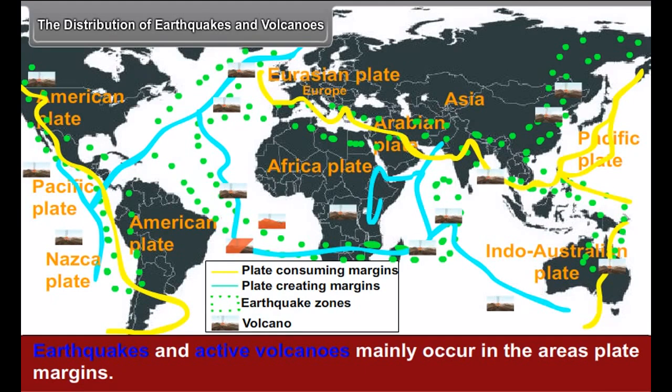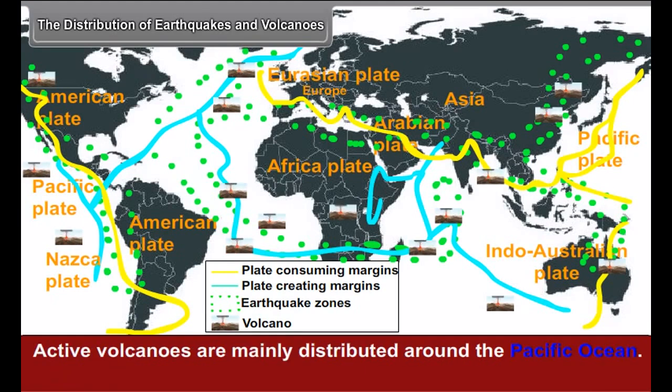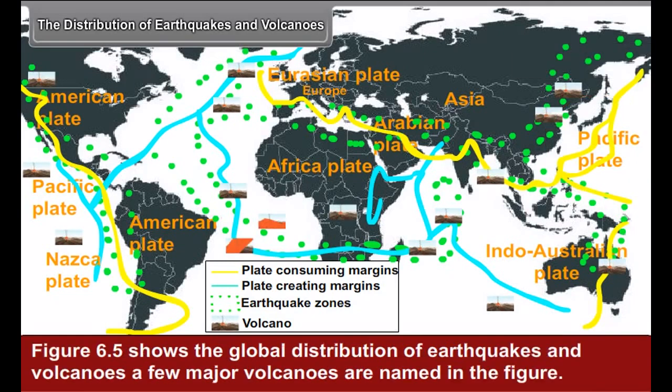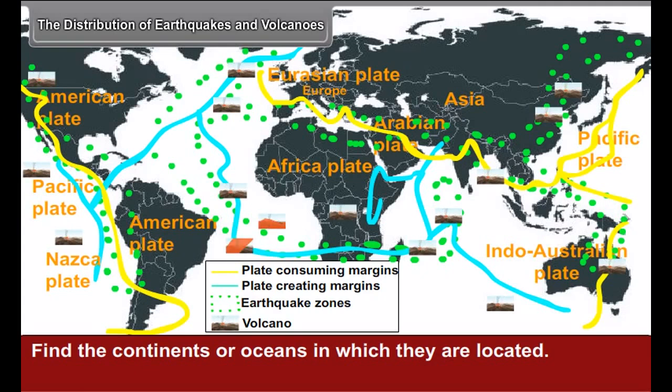The Distribution of Earthquakes and Volcanoes. Earthquakes and active volcanoes mainly occur in the areas of plate margins. Active volcanoes are mainly distributed around the Pacific Ocean. Therefore, this region is called the Circle of Fire. Figure 6.5 shows the global distribution of earthquakes and volcanoes. A few major volcanoes are named in the figure. Find the continents or oceans in which they are located.